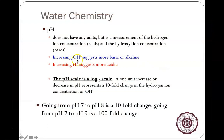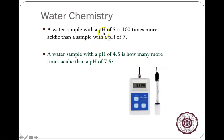A one-unit pH change means 10 times more basic or acidic. Going from pH 7 to pH 9 is a 2-unit change — 100 times more basic. Going the other way, a water sample with a pH of 5 compared to pH 7 is two units different — 10 × 10 = 100 — so it is a hundred times more acidic.